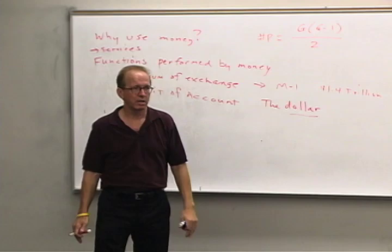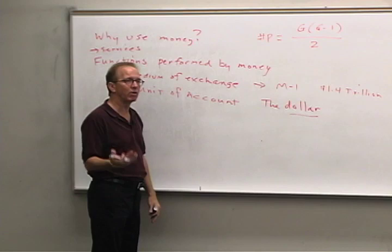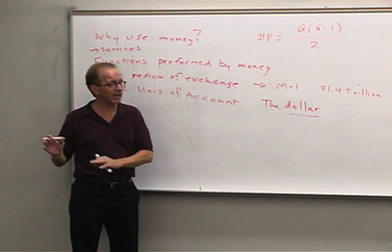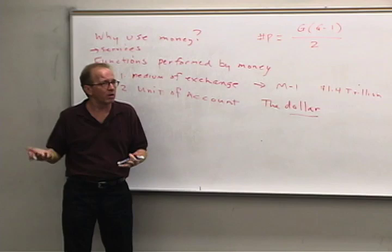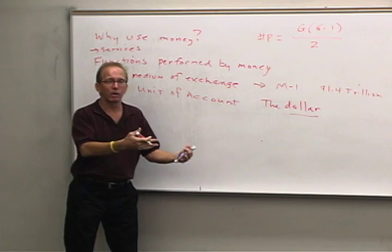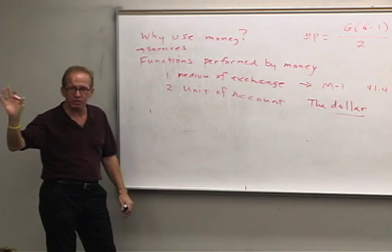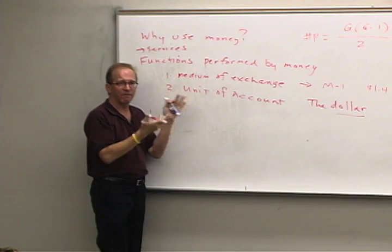Money reduces the amount of information we need to process, making it easier to do business and get a good deal. Without a unit of account, you'd have to figure out how many shoestrings a dozen eggs is worth — and people would constantly take advantage of you. Eventually you'd withdraw from the marketplace and just keep chickens and raise your own eggs. Having all this information to deal with is a transaction cost. With barter and no medium of exchange, with barter and no unit of account, we have high transactions costs.